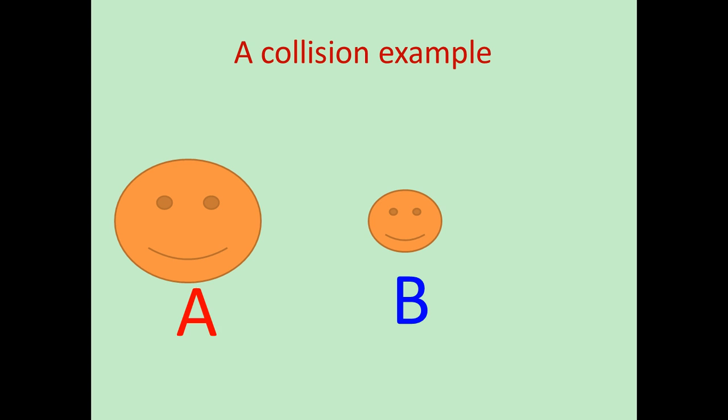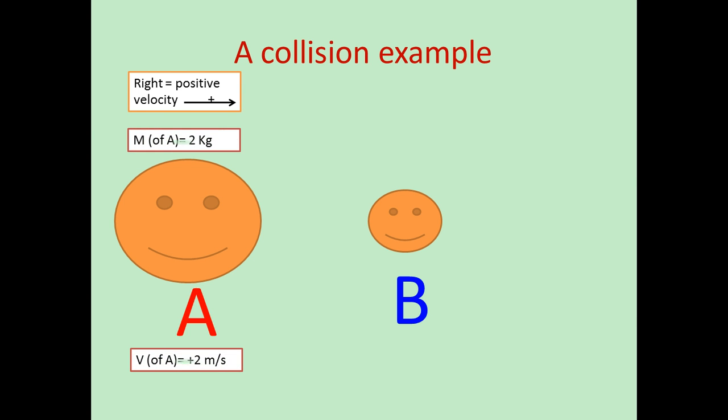Here's an example we're going to talk you through. We define straight away that going right is a positive velocity. You always want to point out which direction is positive, because it's a vector quantity — one direction is positive, the other negative. Object A has mass 2 and velocity 2. Object B has mass 0.5 and velocity 0.